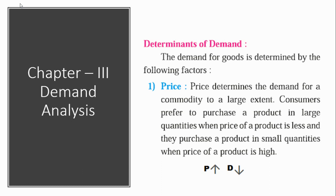I hope you remember the formula for demand: Demand equals Desire plus Willingness to pay plus Ability to pay. Now we will come to our subtopic — the determinants of demand. The demand for a good is determined by the following factors. In total, there are 10 factors, and we will see them one by one.